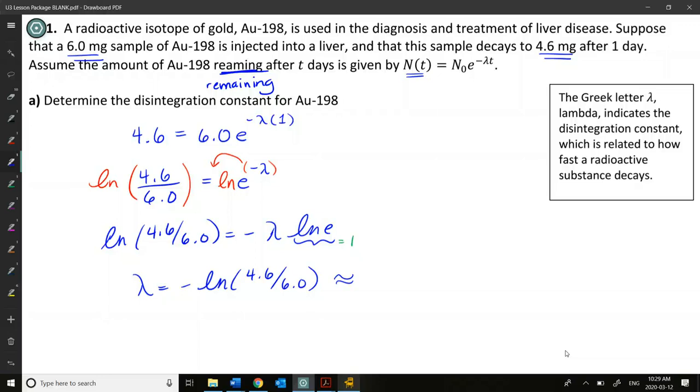So we have negative lambda times ln E, and the nice thing about using ln here is that ln E actually equals 1. So if we find the ln of 4.6 over 6.0 and multiply it by negative 1, we will have our disintegration constant. So if we were to leave this as a more precise answer, we could leave it here, or we can kind of calculate approximately what that would be. Grayson's getting 0.26 something or other. You guys all got that as well? It's a negative, right? No.